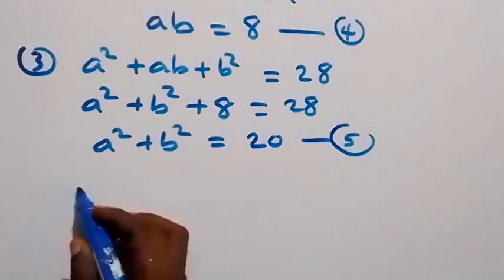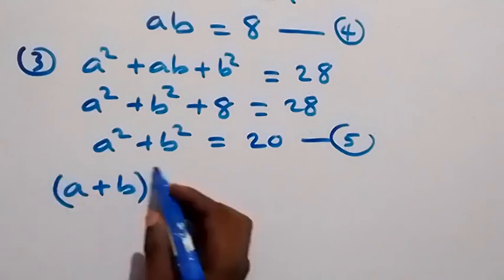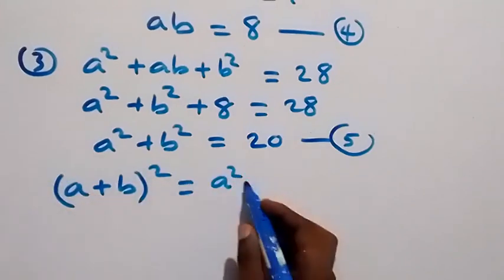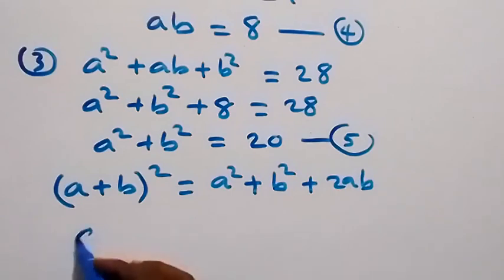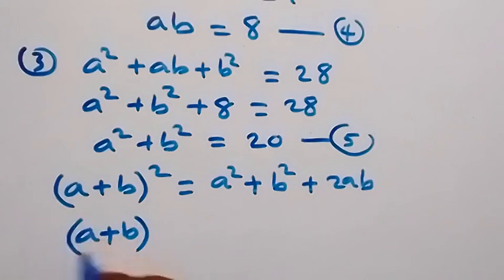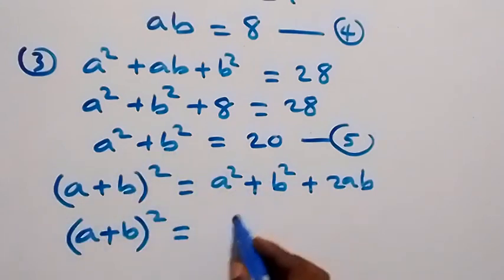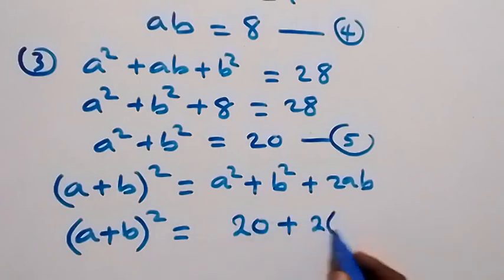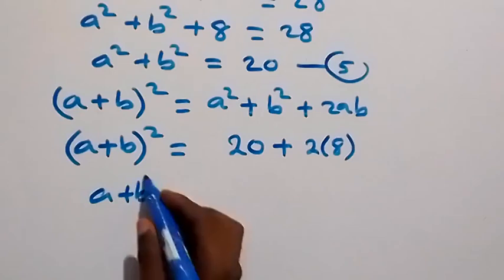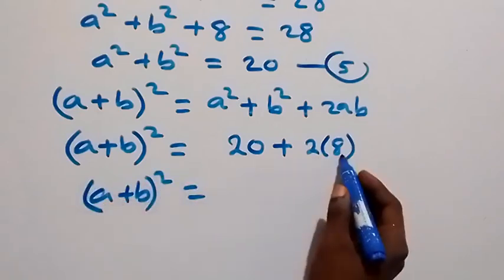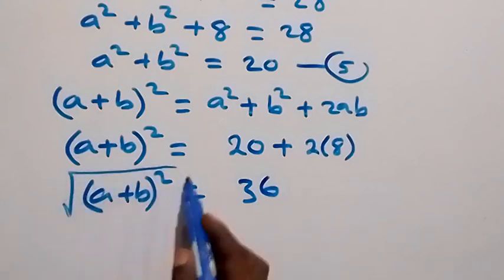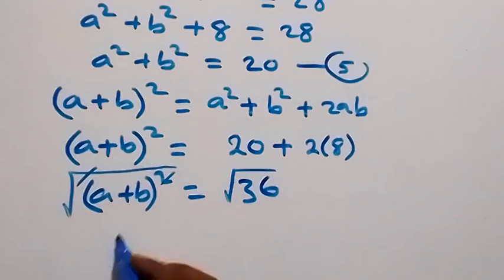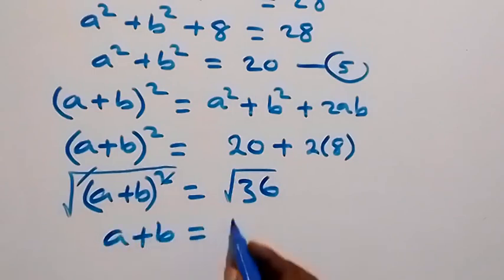Using the identity (a + b)² equals a² + b² + 2ab, we substitute: a² + b² is 20 and 2ab is 2 times 8 equals 16. So (a + b)² equals 20 plus 16 equals 36. Taking the square root, a + b equals plus or minus 6.